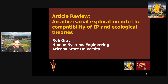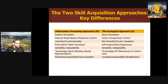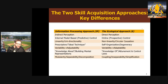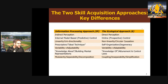The overall context, as a reminder, is that there are two distinct theories for skill acquisition: the information processing approach, the traditional approach, and the ecological approach. I have a very strong view that these things are completely incompatible and cannot be integrated in any way. I want to put that out front — that's my bias in reviewing this article.